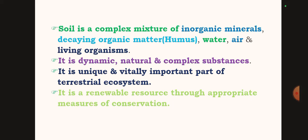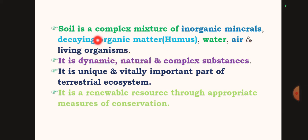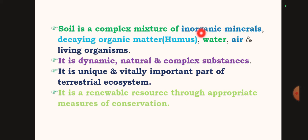Soil is a complex mixture of organic minerals. The decaying organic matter is called humus. Soil also contains water, air, and living organisms. It is a complex mixture of both organic and inorganic minerals, which may be soluble or insoluble.